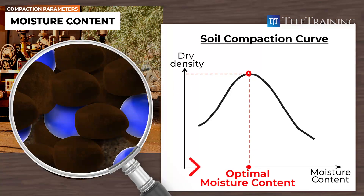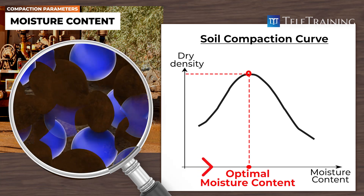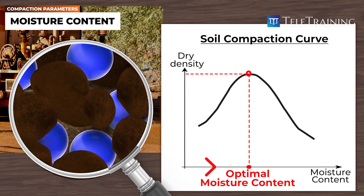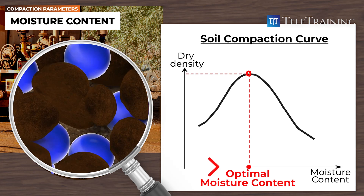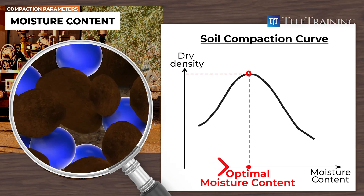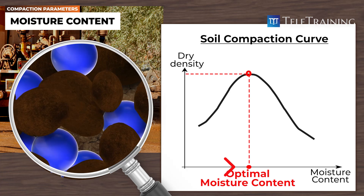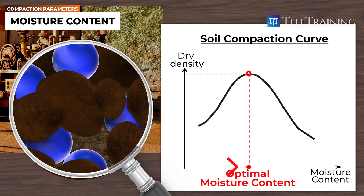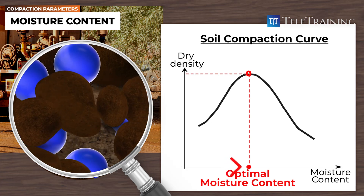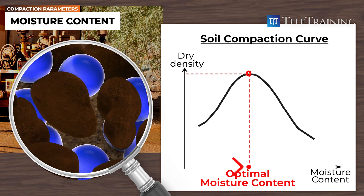Starting from the left with a low moisture content level, as the water content increases, it fills the space around the soil particles. Water provides lubrication, which increases with increasing moisture content, until the optimal moisture content level is reached.